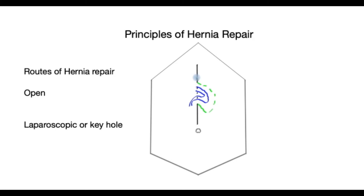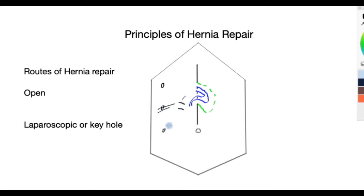In the keyhole approach, the surgeon will start somewhere a bit further away, make tiny cuts in the belly, put a camera inside, and perform the operation from the inside. There is no right or wrong and no better or worse — both are valid approaches for hernia repair.